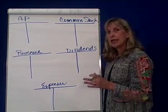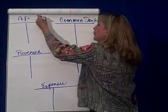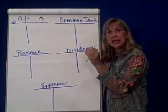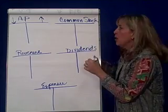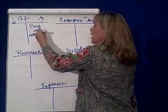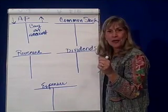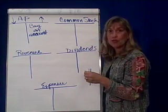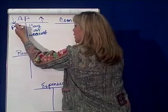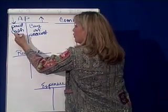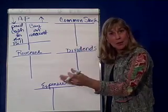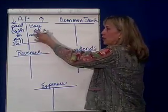Accounts payable — that's a liability account. Credits increase liabilities and debits decrease liabilities. So what would I expect to see in my T account for accounts payable on the credit side? Well, it's whenever I buy on account — in other words, whenever I use my credit card instead of paying cash for something that I'm purchasing. The only time your accounts payable would go down is if you paid cash for the bill. So you pay your bill and you debit accounts payable and credit cash. Isn't that how you make your bills go down?